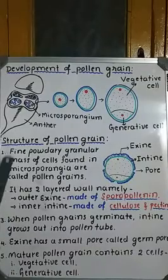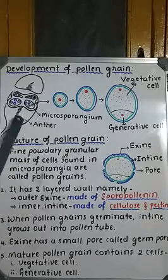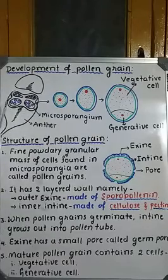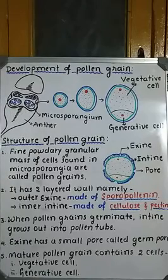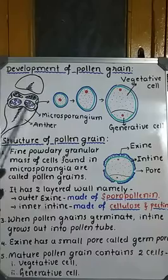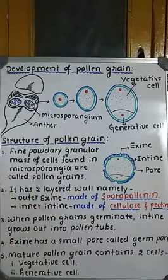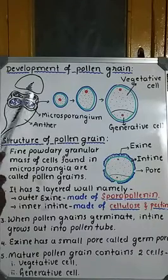A typical stamen consists of a filament and anther. This figure is of a dithecous anther. In a dithecous anther, two lobes are there, and each lobe contains two pollen chambers. In this way, the dithecous anther contains four pollen chambers, which are also known as microsporangia or pollen sacs.